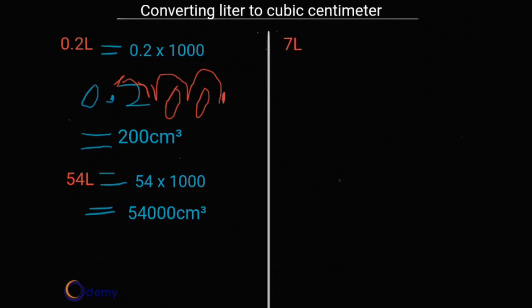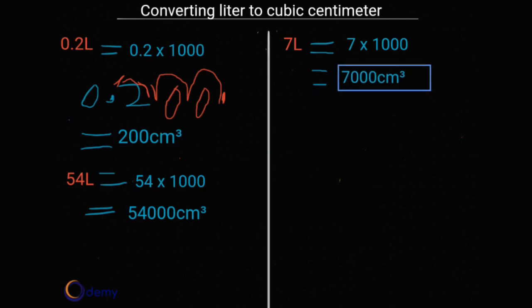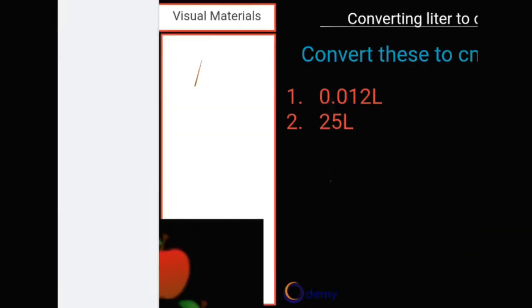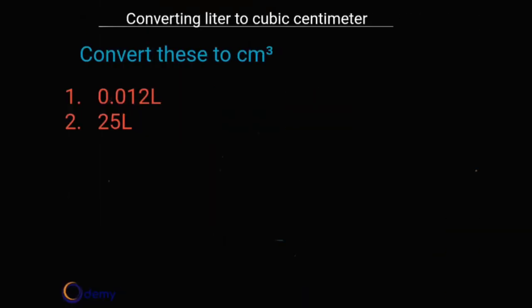The last example is 7 liters. Pause the video and think about how to convert 7 liters to cubic centimeters. We multiply by 1000: 7 multiplied by 1000 equals 7,000 centimeter cubed. That is how you convert liters to cubic centimeters.